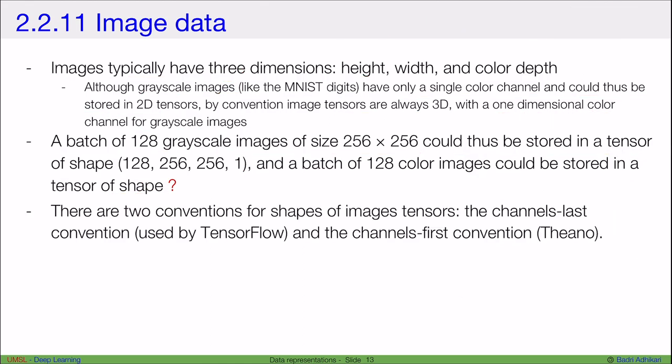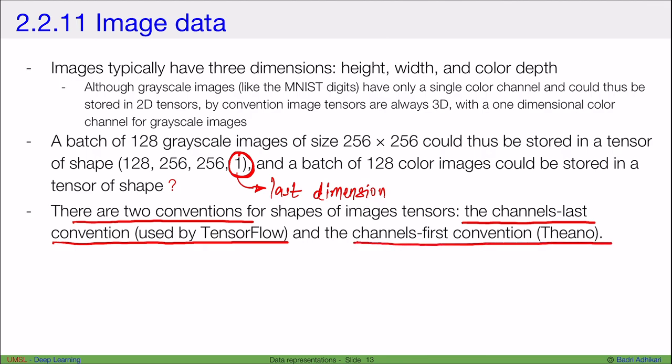Usually, to represent images, there are two conventions. The first convention is the channels-last convention, which is used by TensorFlow. For example, we specify the channel at the end or the last dimension. So channel becomes your last dimension. And the opposite convention is to use channels-first. And this is used by Theano and other libraries like PyTorch. Since we are using TensorFlow, we will always just stick to the channels-last dimension.